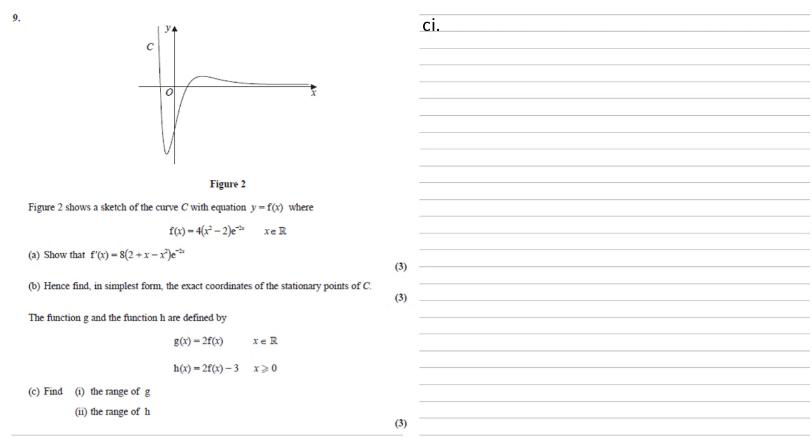Firstly, we need to find the range of g. So we've got our stationary points for f, so minus 1 minus 4e squared and 2, 8e to the minus 4.